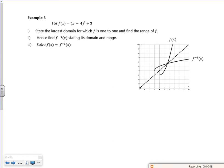Right then, so this is the third video for the third lesson of the functions pack and it's all going swimmingly. So it says f of x is x minus 4 all squared plus 3. State the largest domain for which f is one-to-one.